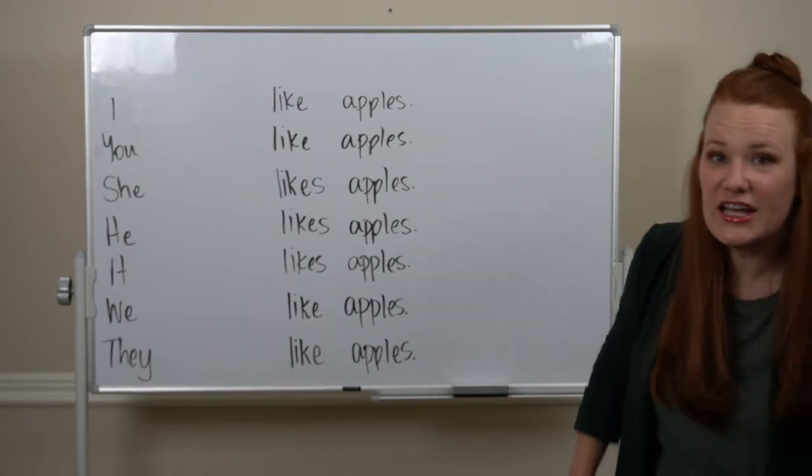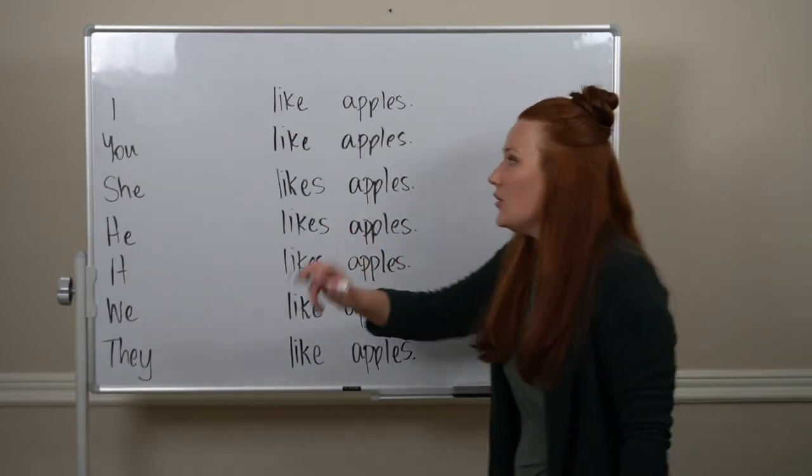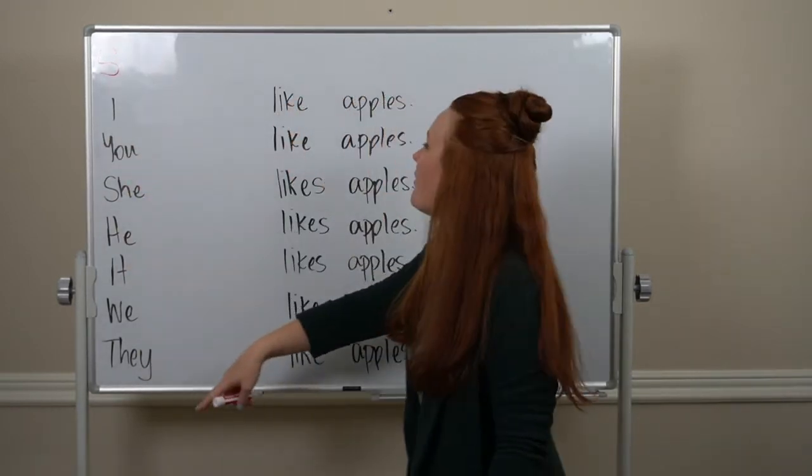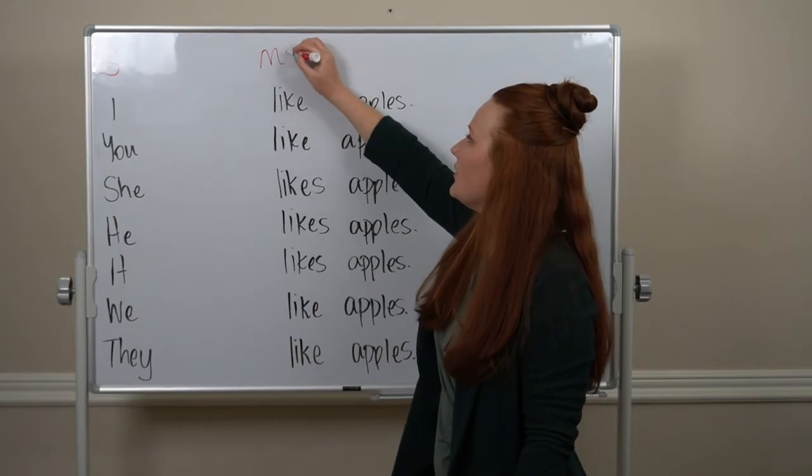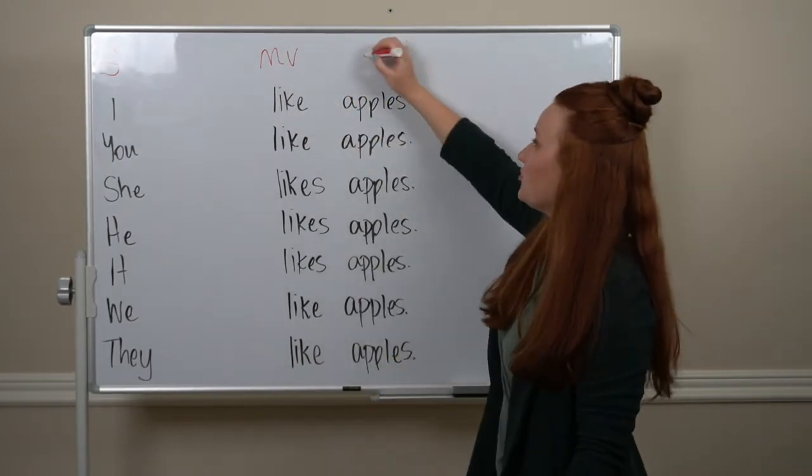First, let's talk about regular sentence order. We start with the subject, our pronouns, then our main verb here, 'like', then our direct object, 'apples'.